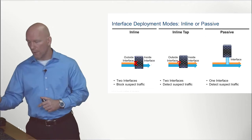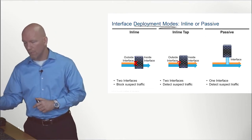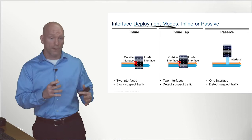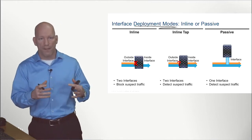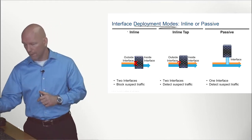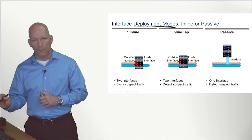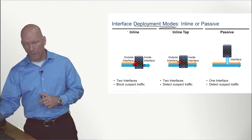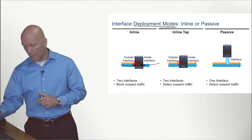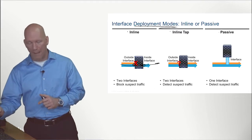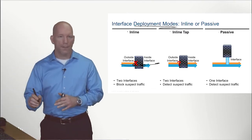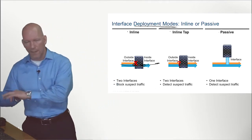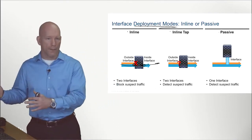The first thing we're going to go over is the modes in which we can deploy our physical appliances — the managed device. We can deploy it inline, inline tap, or passive mode. Inline literally uses two interfaces and all the data must pass through this appliance and be processed according to our policies before it is sent out of the other interface.